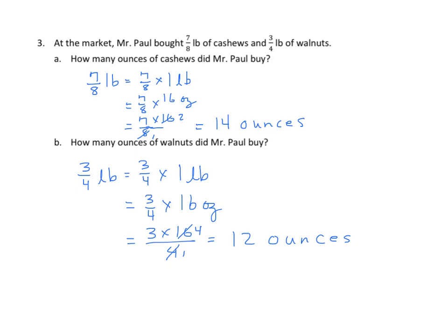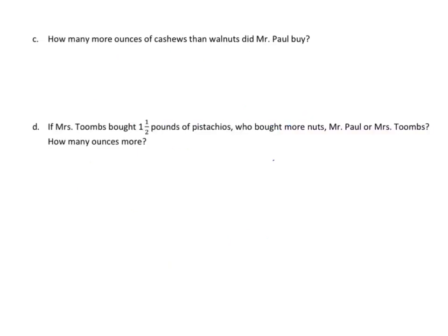We have fourteen ounces of cashews and twelve ounces of walnuts. Carrying that to the next slide: how many more ounces of cashews than walnuts did Mr. Paul buy? Simply subtract — fourteen minus twelve gives two ounces. Mr. Paul bought two ounces more of cashews than walnuts.